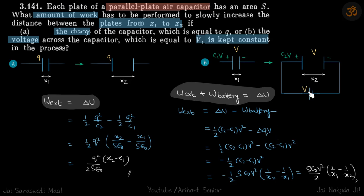So how much charge has passed through the battery? Initially it was C₁V, so eventually it becomes C₂V. So Δq into V is (C₂V - C₁V) into V, which is (C₂ - C₁)V².